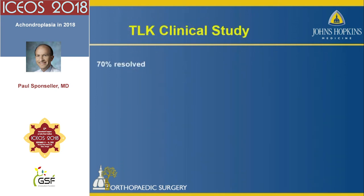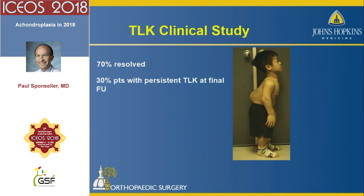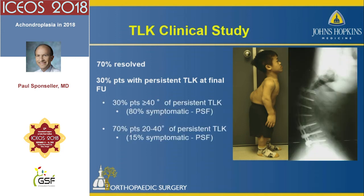We did a study of thoracolumbar kyphosis in young children and found that about 70% resolved completely, 30% had some persistent thoracolumbar kyphosis at final follow-up. Depending on severity, they may or may not need intervention. If the kyphosis was more than 40 degrees, there was a high chance of symptomatic spinal stenosis and fusion. If it was between 20 and 40 degrees, they tended to do well with very few significant spinal issues.